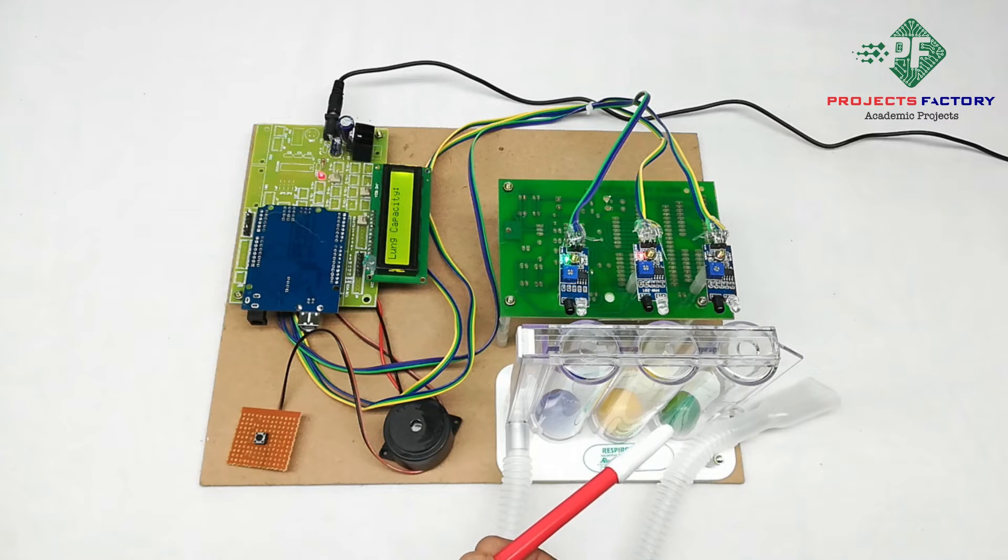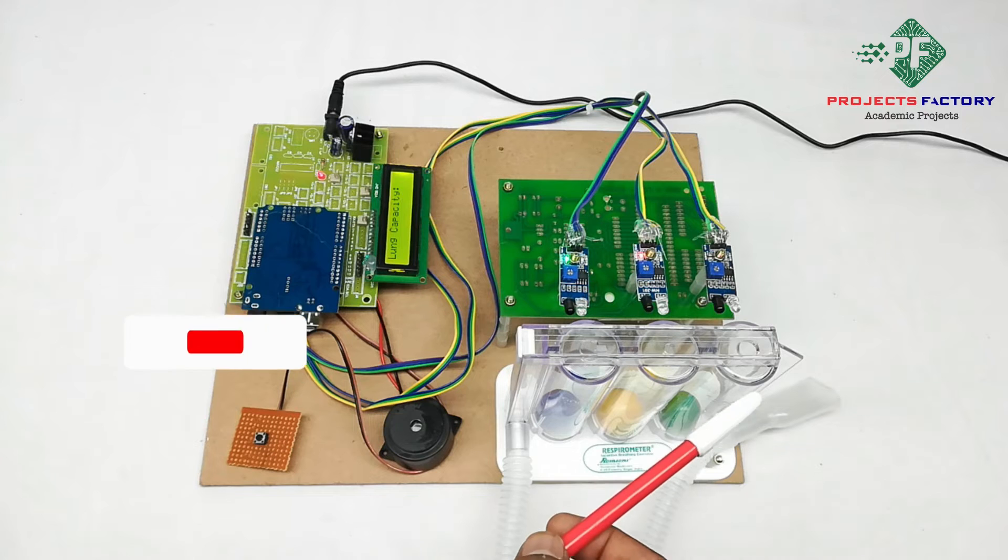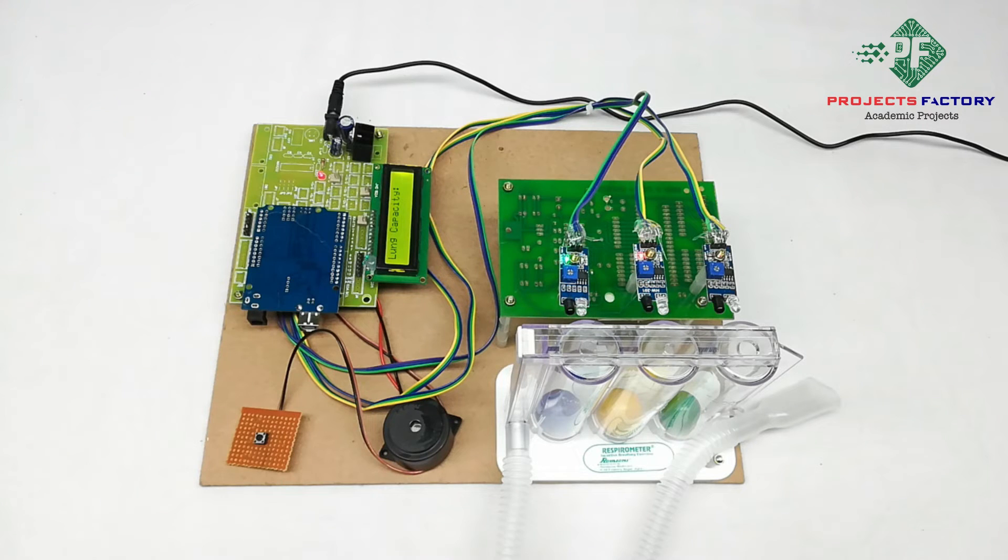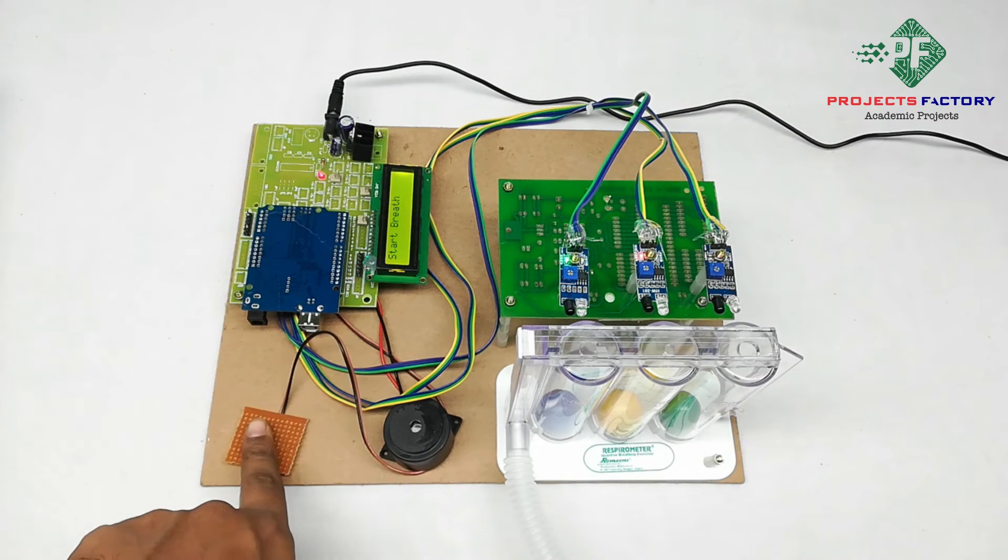Based on the ball's displacement, it calculates CC of lungs. For first ball: 600 CC, first and second ball: 900 CC, all three balls: 1200 CC. The buzzer will turn on to indicate holding time, then we press the button.